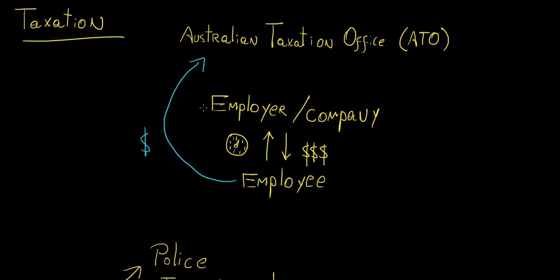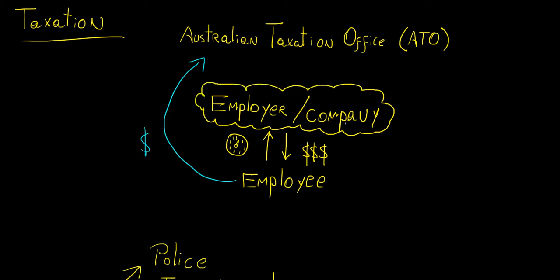It all starts with the employer or the company. During your lifetime you're going to find a job, and it's most likely that you're going to work for a specific company or some industry. Unless you manage to get your own business and be your own boss, you're probably going to be working for someone else. That company is going to pay you a certain amount of money, which we call the salary, in exchange for your time — around 40 hours every week if you're working full-time.